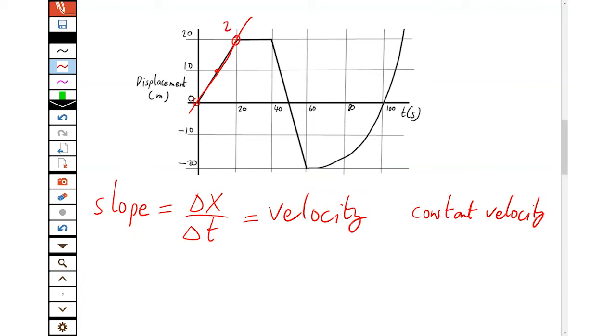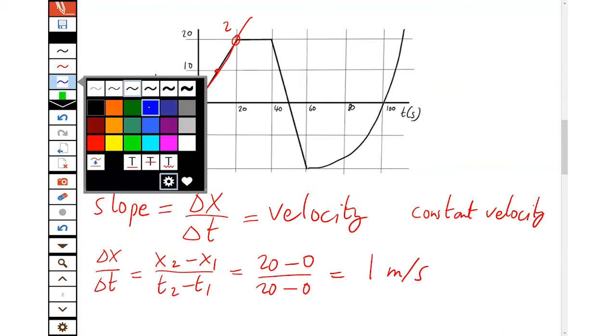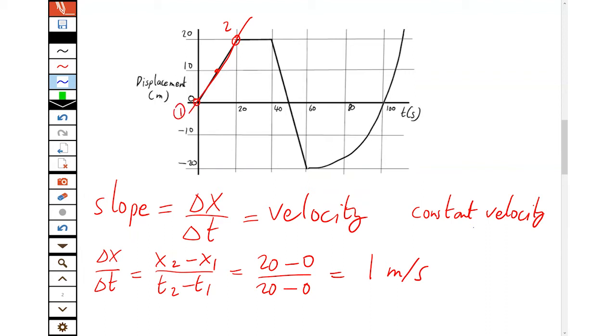Now we can work out the velocity. We take the second point and the first point. So the change in position over the change in time, new position minus the old one, new time minus the old one, 20 meters minus 0, over 20 seconds minus 0. So that's moving at 1 meter per second.